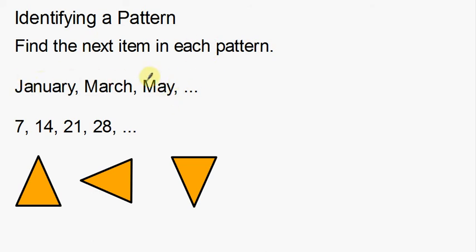Looking at this first example, I see January, March, May. It looks like we're talking about months of the year. It might be easier if you go through all the months, so whenever I try to figure out the next month in the series, I always start from January: January, February, March, April, May. Notice what happens here — February is not there, then March appears, then April is skipped, and then May. So it looks like we're skipping every other month.